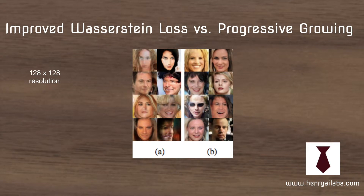This image shows the Wasserstein GAN compared to the progressively growing model. On the left in set A is the Wasserstein, and B is the progressively growing model. This comparison is on 128x128 resolution.